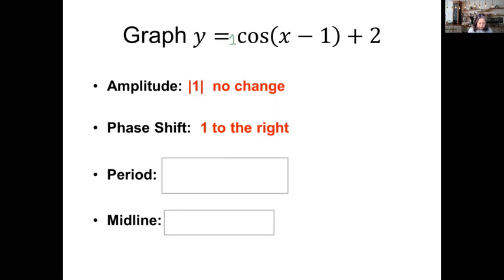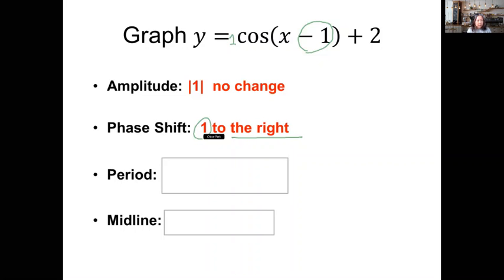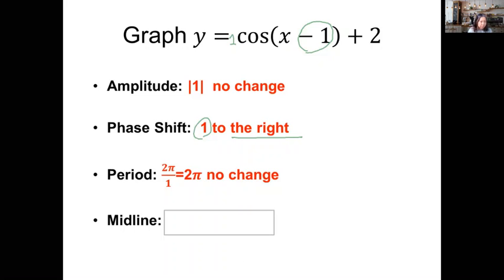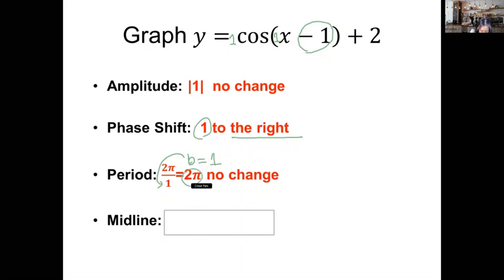Because the b value is one and the c value is negative one, the horizontal shift is one unit to the right. For the period: b is one, so the period is 2π over 1, which equals 2π — no change in period. For the midline: d is two, so the midline is at y = 2.